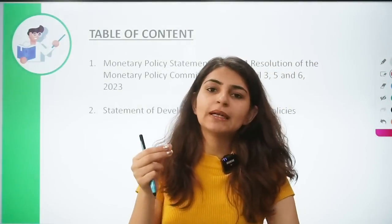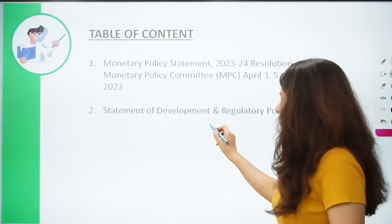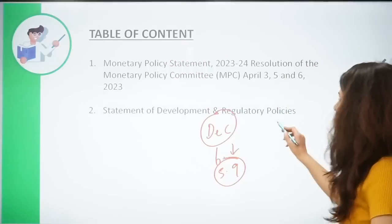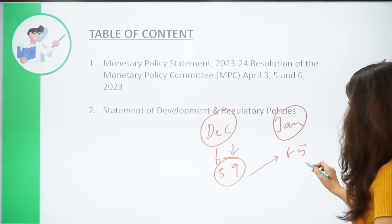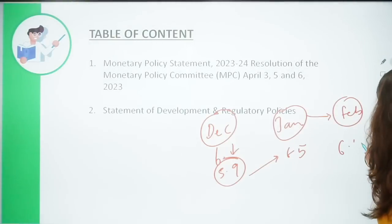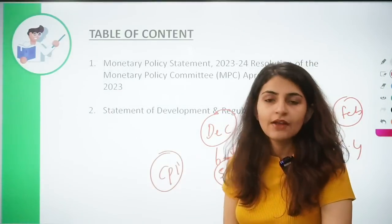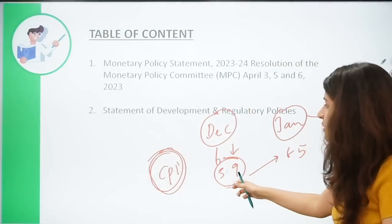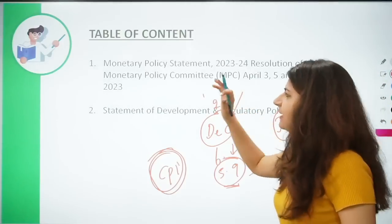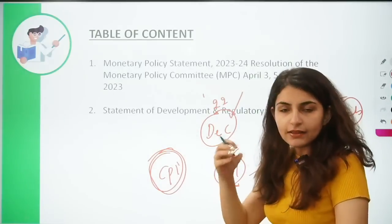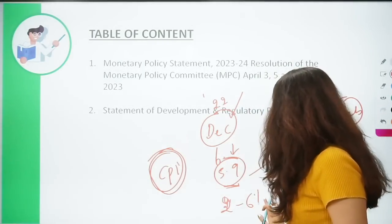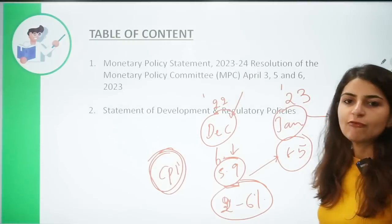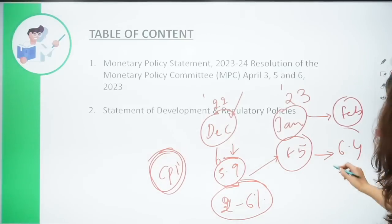Inflation in the month of December fell below 6%, somewhere around 5.9%. In January it rose again to 6.5%, and in February it was around 6.4%. This is the CPI — Consumer Price Index — inflation that we are talking about, because RBI targets CPI inflation. So 5.9% in December 2022 showed inflation was finally within the 2–6% band. Unfortunately, in January 2023, inflation rose to 6.5%, breaching the RBI target, and again breached it in February.